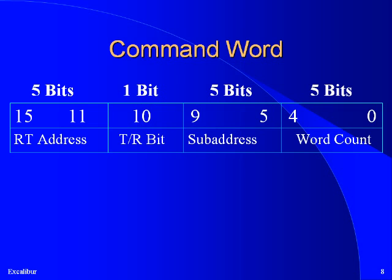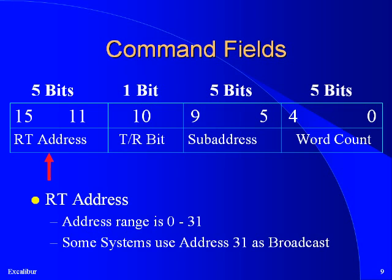A closer look at the command word shows that it is 16 bits long and comprised of four distinct fields. The first field is a five-bit field called the RT address. Having five bits gives it a range of 0 to 31, allowing for up to 32 RTs in the network. Some aircraft use address 31 as a broadcast address, allowing messages to be transmitted to all RTs simultaneously; these aircraft can only support up to 31 remote terminals.